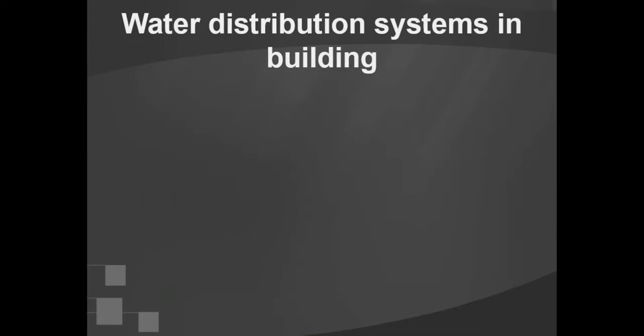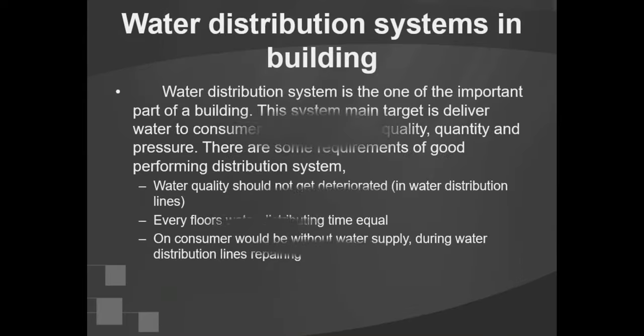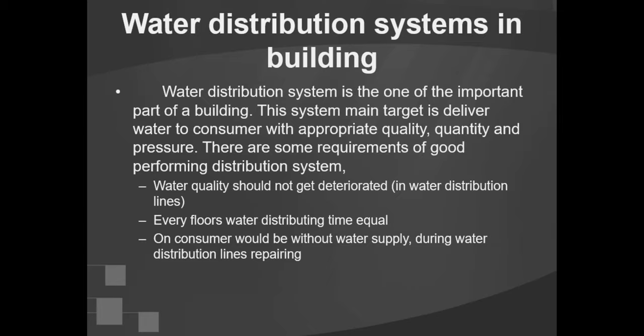Next we talk about water distribution systems in buildings. The water distribution system is one of the important parts of a building. Its main target is to deliver water to consumers with appropriate quality, quantity, and pressure. Requirements of a good distribution system include: water quality should not deteriorate in distribution lines, water distribution time should be equal for every floor, and no consumer should be without water supply during repairs.